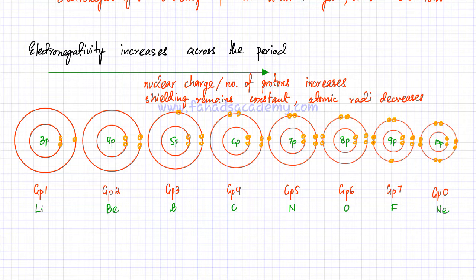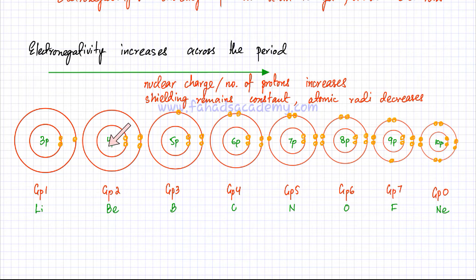So as you move across the period, there's more nuclear charge and more force of attraction. The atomic radius of the atoms also slightly decreases, although each atom has two shells. But since the attraction for electrons is greater on the right-hand side, the atom would be slightly smaller.